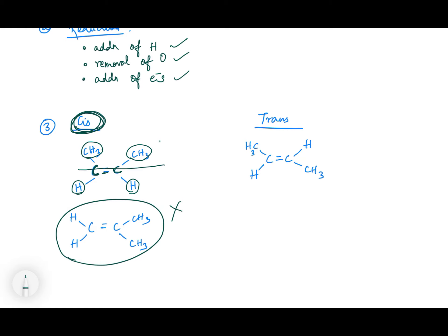We consider a compound as cis only when different groups are attached to one carbon. If both groups on a carbon are methyl groups, it cannot be cis. Similarly, if both are hydrogen, that is also not valid. But here, if one carbon has one methyl group and one hydrogen — two different groups — you can consider it as cis.